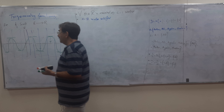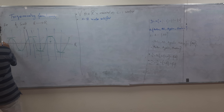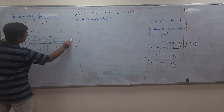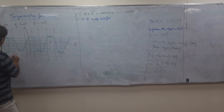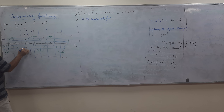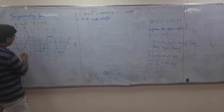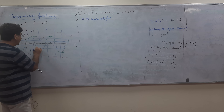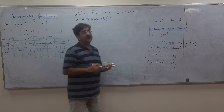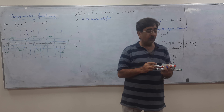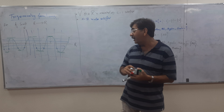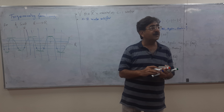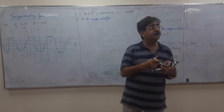Now, the condition is if we draw parallel lines to the x-axis, they will intersect the sine curve many times at different points. So the beta value will be repeated — for different values of theta, beta will be repeated.